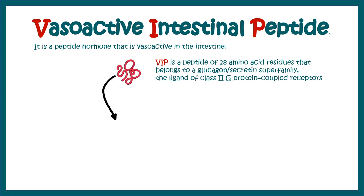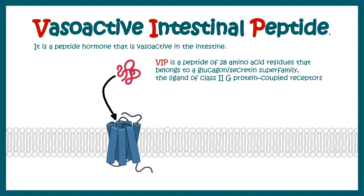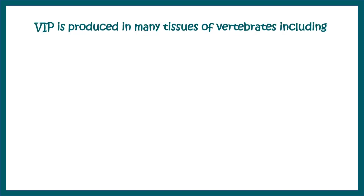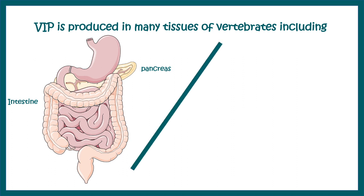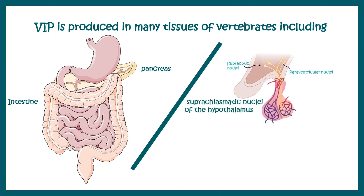VIP binds to specific G protein-coupled receptors present on the target cells. VIP is produced in many tissues of vertebrates, including the pancreas, intestine, and also in the brain. It is synthesized by the supraoptic nucleus of the hypothalamus.